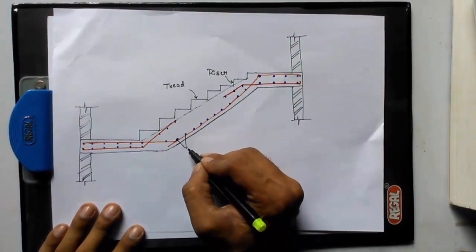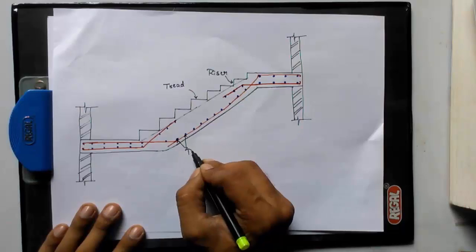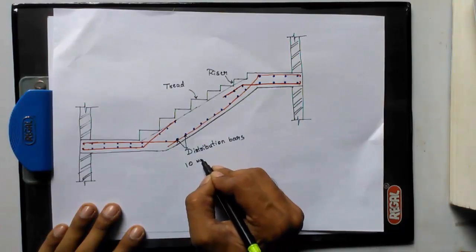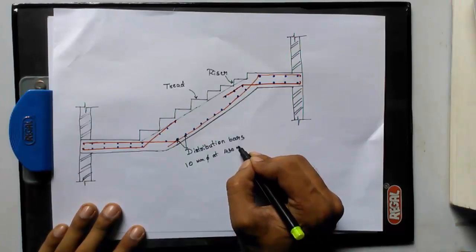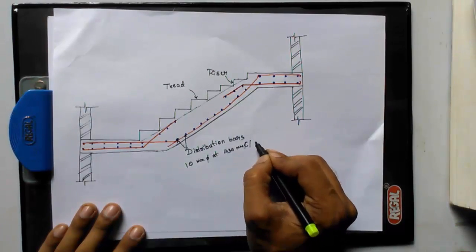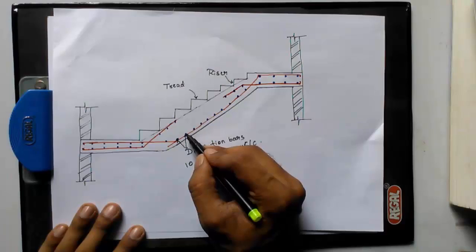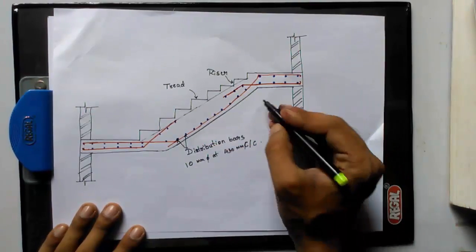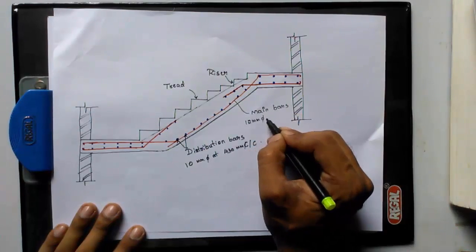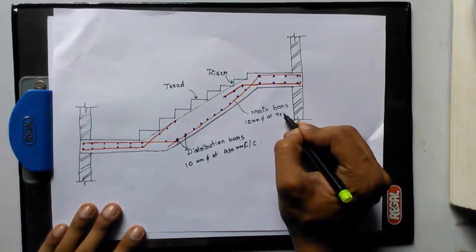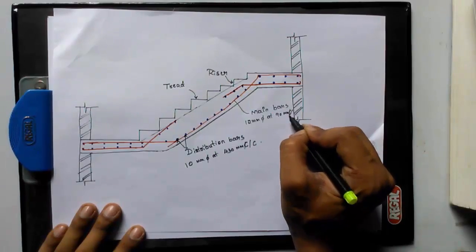Next you need to name these things. This will be distribution bars, 10 mm diameter at 430 mm center to center. That means the distance between these two is 430 mm. Next, this is main bars, 12 mm diameter at 90 mm center to center.